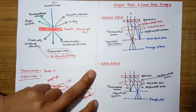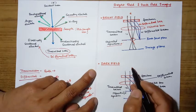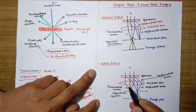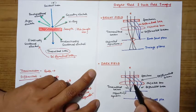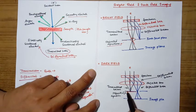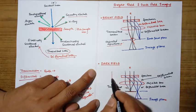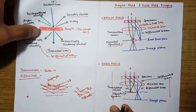In dark field imaging, the same phenomenon occurs — some electrons are transmitted and some are diffracted. However, the objective aperture here stops the transmitted beam from reaching the image plane and allows only the diffracted beam to fall on the image plane. The image is thus formed using the diffracted beam — this is called dark field imaging.